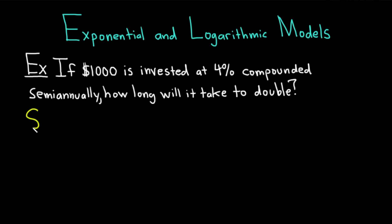It's a fun problem to work through. If you have $1,000 and you're investing it at 4% where the interest is compounded twice a year, that's what semi-annually means, how long is it going to take to actually double your money? So there is a formula for compound interest that we're going to use. The formula is A equals P times (1 plus R over N) to the NT. And this is an example of an exponential model.